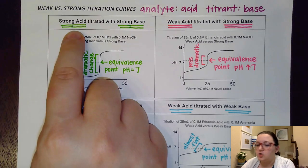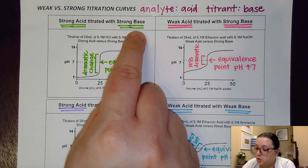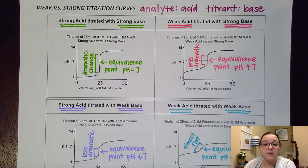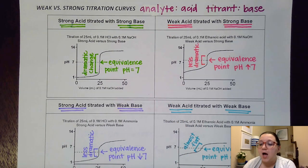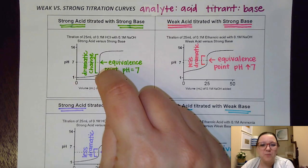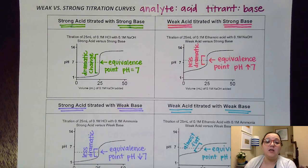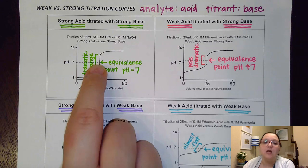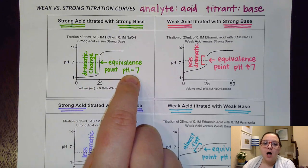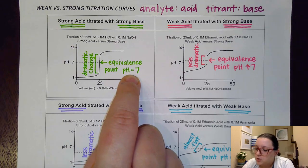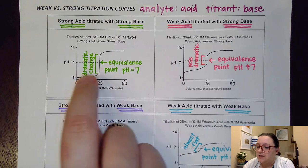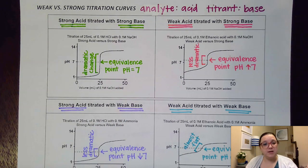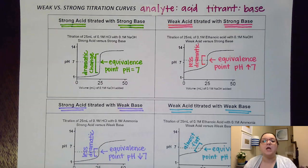Let's start off with a strong acid and a strong base. You will notice our general S shape that we always see with the titration curve. However, at the equivalence point, we have a pretty dramatic change that happens in our pH at that point, and at that point exactly we would have a pH of 7 on the nose. Also, notice that our starting pH and our ending pH are pretty extreme, and that has to do with the strong acid, strong base nature of those substances.